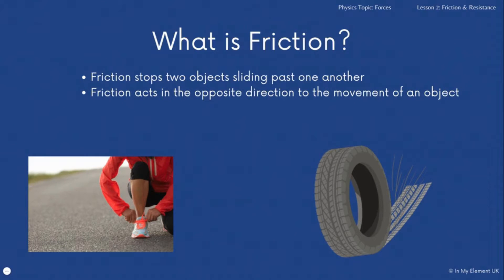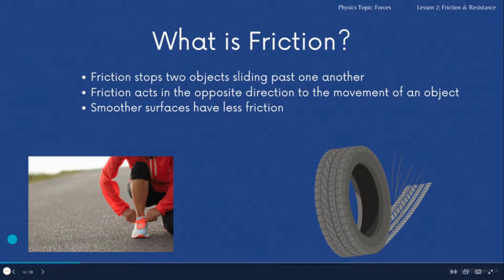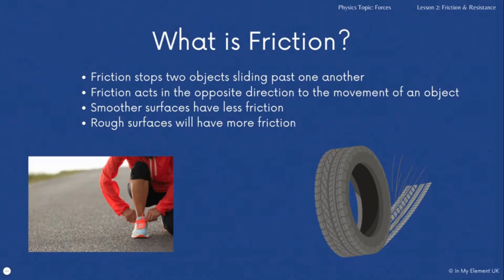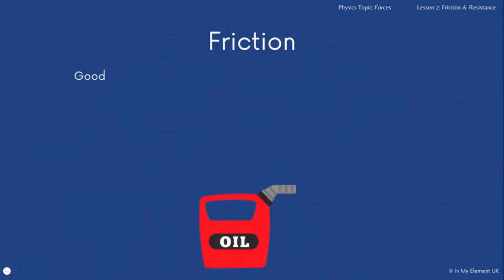The more friction there is, the slower an object will go. You can see the tread on the tires — as tires get worn that tread disappears, meaning less friction between the tire and the road and less grip. Smoother surfaces have less friction and rougher surfaces have more friction. For the runner, the combination of tread on the trainers and the surface they're running on determines how much friction there is.